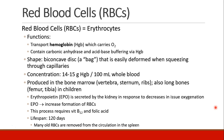Red blood cells are produced in the bone marrow — your vertebra, your sternum, and your ribs. Also the long bones in children, like the femur and the tibia. Erythropoietin is secreted by the kidney in response to decreases in tissue oxygen, and EPO leads to increased formation of red blood cells.